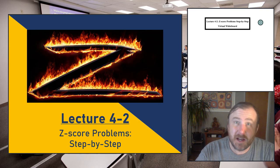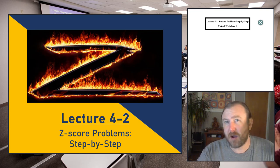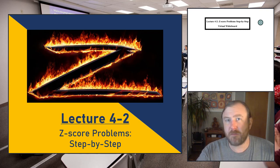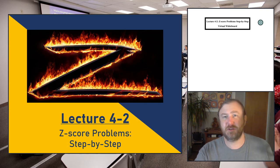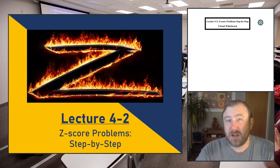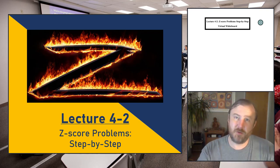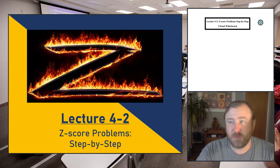Welcome back, everyone. This is the second part of lecture four. In the first part, we described the standard normal distribution and talked about the standardization process — basically how we can take any score from a raw score distribution and convert it into a z-score, which is a form of standardization that we can use to leverage the standard normal distribution and learn more information about the data we've collected.